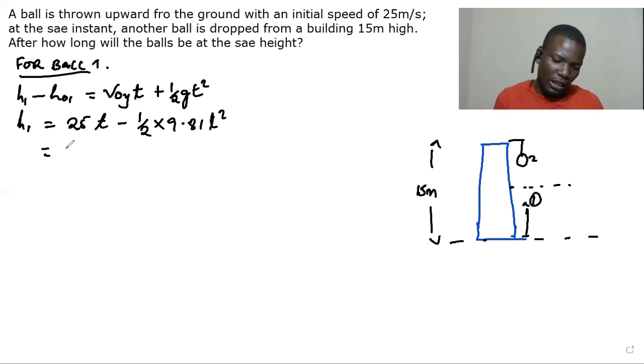We are looking for time. So 25t minus 4.91 t squared. And this is the equation for the first ball.